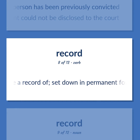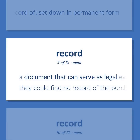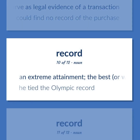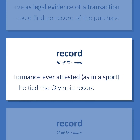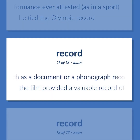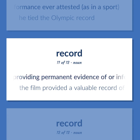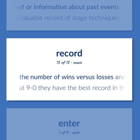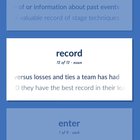Record: make a record of, set down in permanent form. A document that can serve as legal evidence of a transaction — they could find no record of the purchase. An extreme attainment — the best or worst performance ever attested, as in a sport — he tied the Olympic record. Anything such as a document or a phonograph record or a photograph providing permanent evidence of or information about past events — the film provided a valuable record of stage techniques. The number of wins versus losses and ties a team has had — at 9-0 they have the best record in their league.